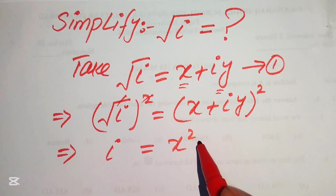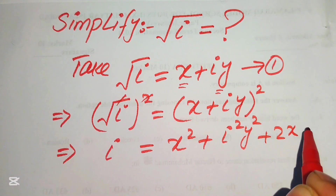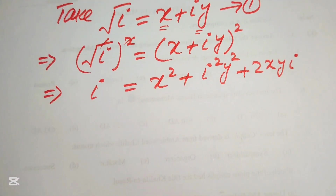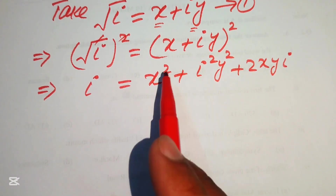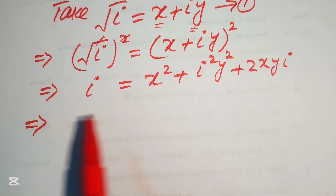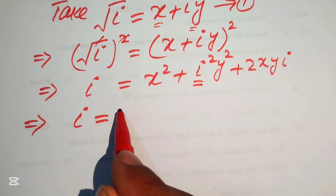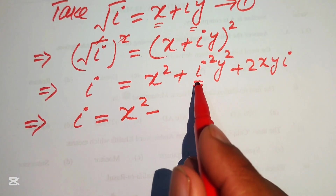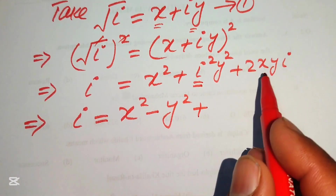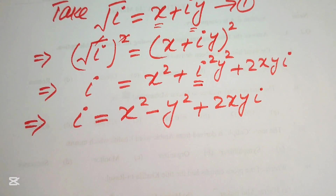Expanding (x + iy)² gives x² + i²y² + 2xy·i. Since i² = -1, this becomes x² - y² + 2xy·i. So we have iota equals x² - y² + 2xy·i.